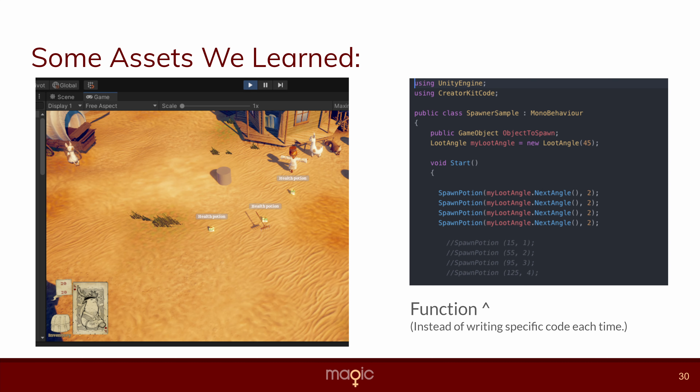Here you can see the functions I mentioned before, showing how code is written more efficiently. Part of the code line shows just the number two, which represents how far the item spawns away from the main coordinate. This works because we have a variable that decides the angle at which the item spawns from the center coordinate, instead of writing individual coordinates like the comments show.